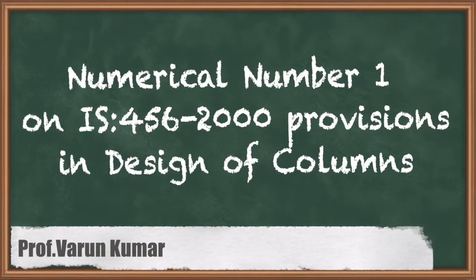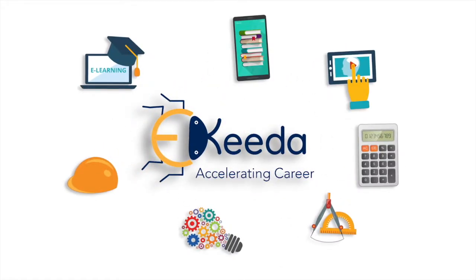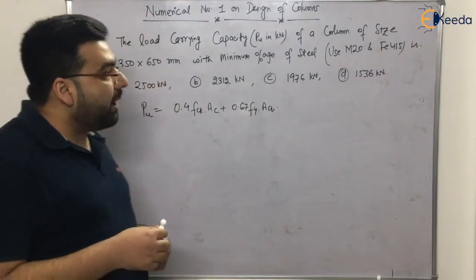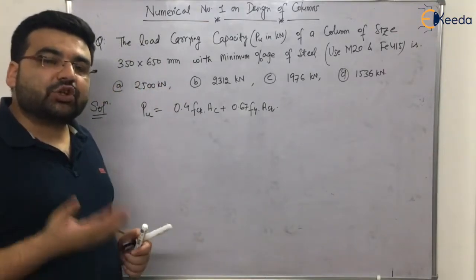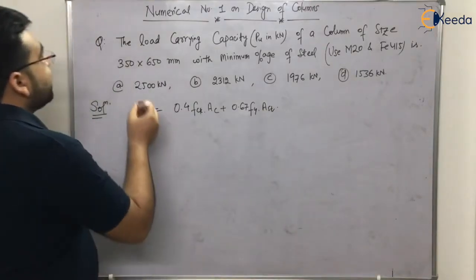Subject: concrete structures, chapter: design of columns, topic: numerical number one on design of columns. So students, now we have studied about the design concepts of a column. Now let us solve a numerical. The numerical is the load carrying capacity.